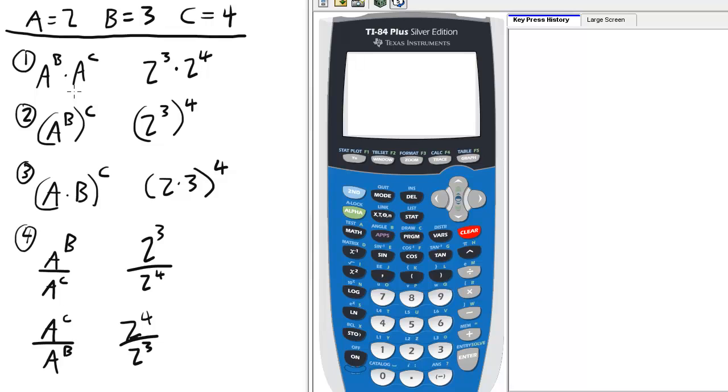So in the first case, we have multiplying like bases: A to the B times A to the C. On the calculator, we'll enter 2 cubed, so 2 raised to the 3. Make sure you scroll over one space so we can multiply easily, otherwise you will get stuck in the exponents. Then times 2 raised to the 4th.